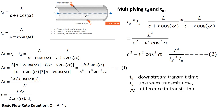The downstream transmit time is: Td = L / (C + V cos(alpha)), because the fluid velocity adds to the ultrasonic velocity. The upstream transmit time is: Tu = L / (C - V cos(alpha)), with a negative sign because the wave travels against the fluid flow.